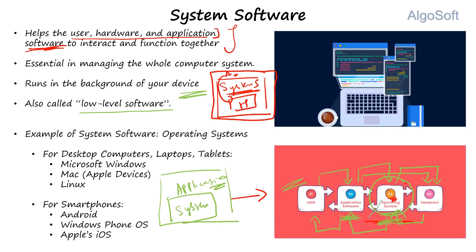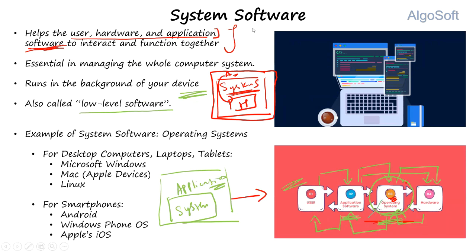Any confusion between application software and system software — just understand the hierarchy where they lie. The next two minor categories — programming software and driver software — are part of your system software, not standalone. Let's go through them.